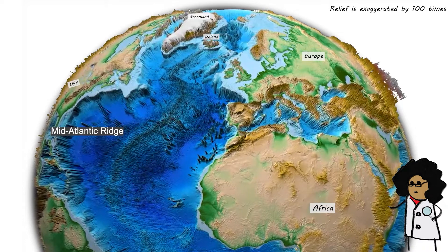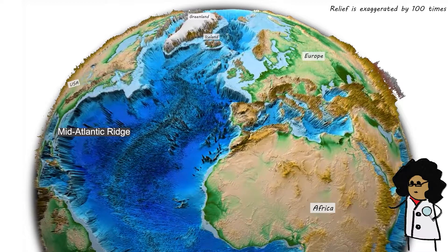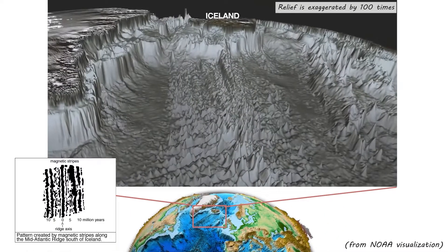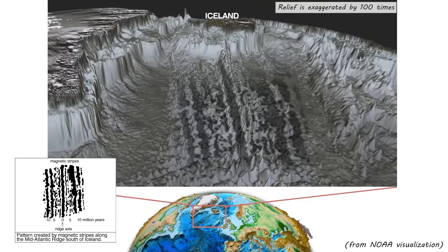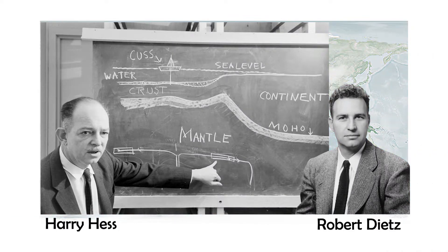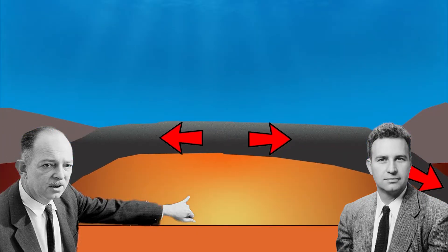Marie Tharp also discovered that there was a deep rift valley that could be traced all along the Mid-Atlantic Ridge. Scientists then found that the seafloor around the Mid-Atlantic Ridge was magnetized into a strange pattern of parallel bands of weaker and stronger magnetic stripes. In 1961, two scientists, Robert Dietz and Henry Hess, used the new information about the seafloor to propose that seafloor spreading was occurring along the Mid-Atlantic Ridge. They argued that seafloor spreading created new oceanic crust by volcanic activity along the ridge, making the ocean a little wider every year.